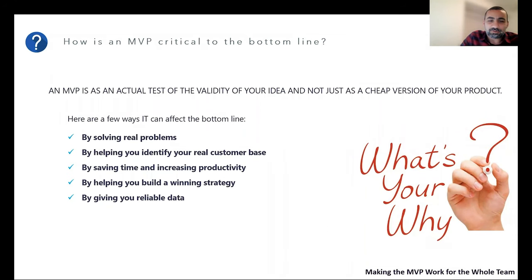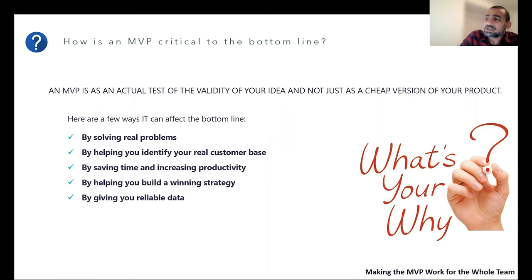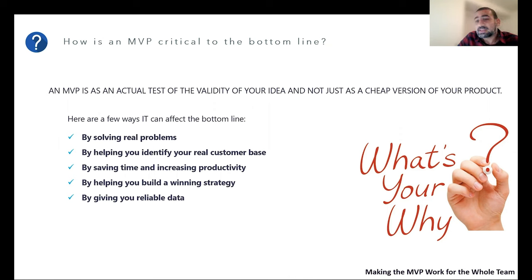Let's look at the first one: solving real problems. Your idea may start off as an answer to a specific question, but your MVP might reveal new demands and related features that come up in the testing process. The MVP helps bring to light issues that you might not have considered otherwise. Customers testing your MVP may realize a feature is nice, but they might also have new demands, change their demands, or change their priorities. That's how this data is going to help us.